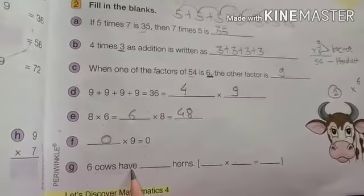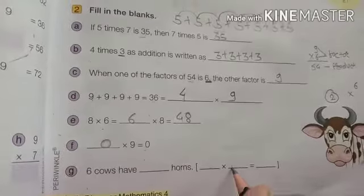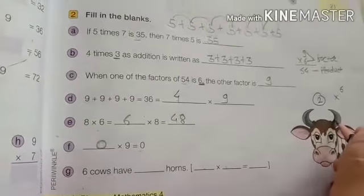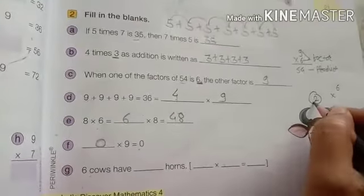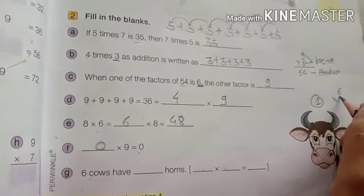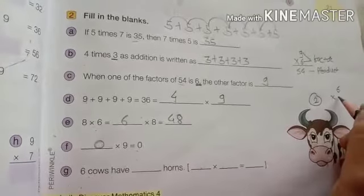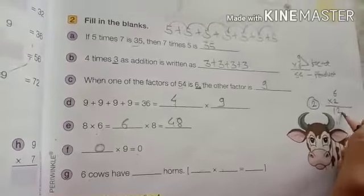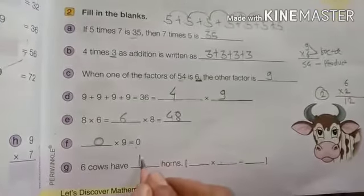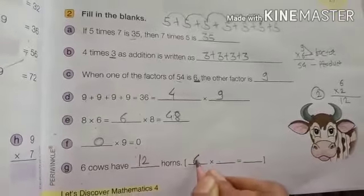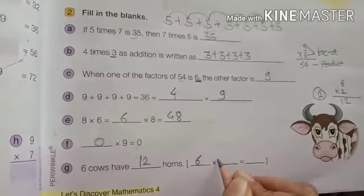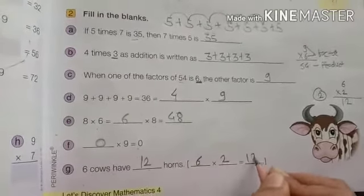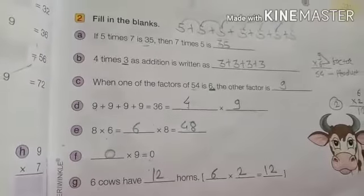Now 6 cows have dash horns, that dash we have to find here. We know that 1 cow has 2 horns. Now we have to find out 6 cows. 1 cow have 2 horns, 2 6 are 12. Means total 12 horns. 6 cows have how many horns? 12. Like this we have to solve.